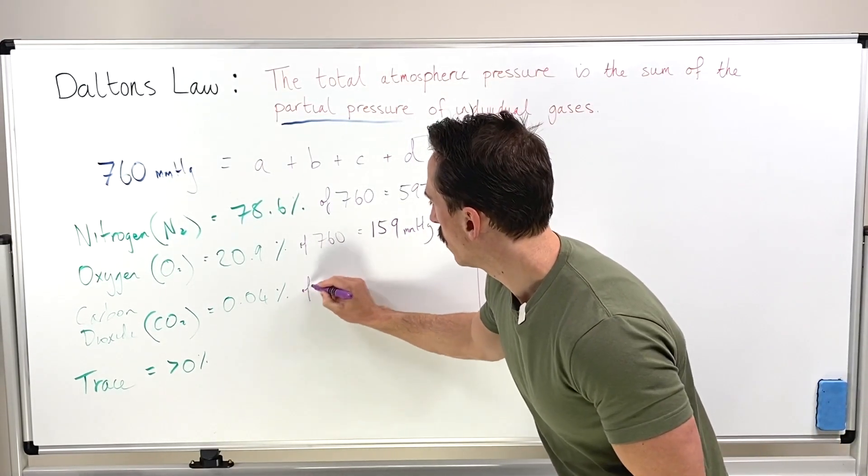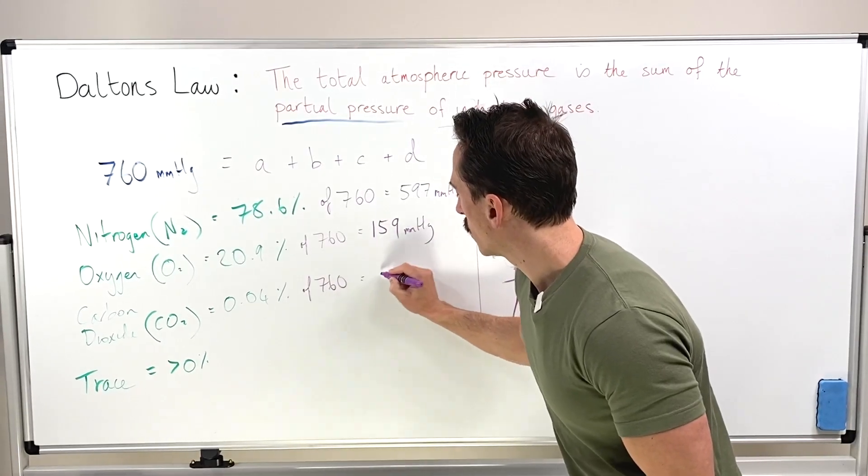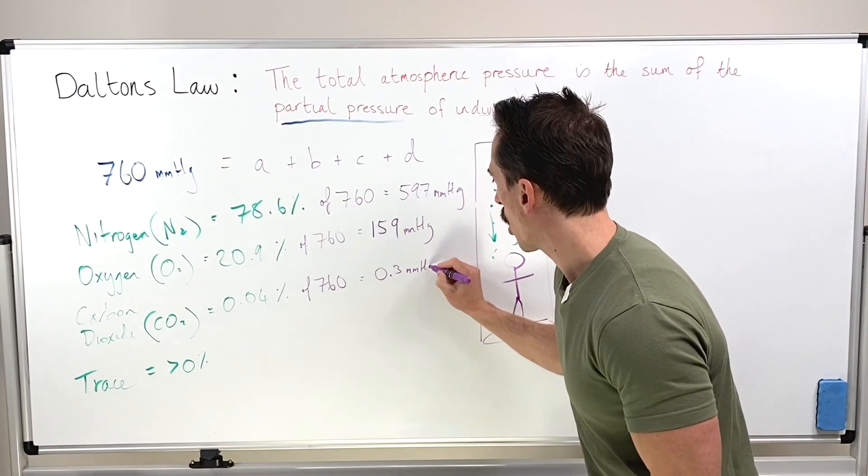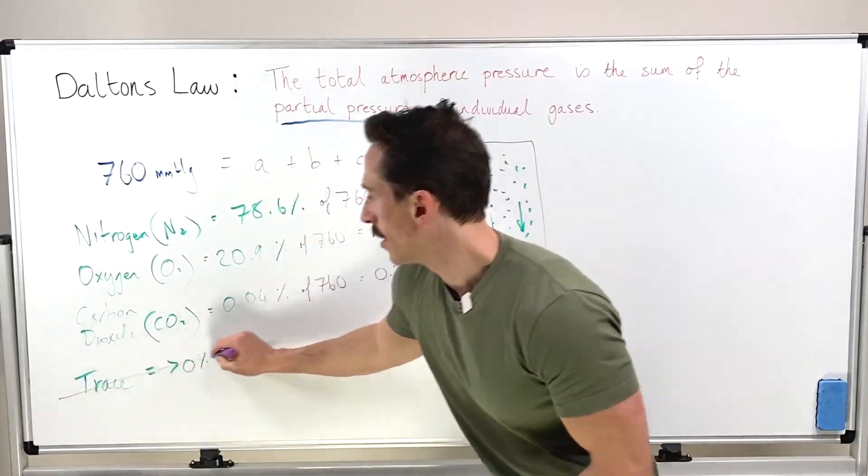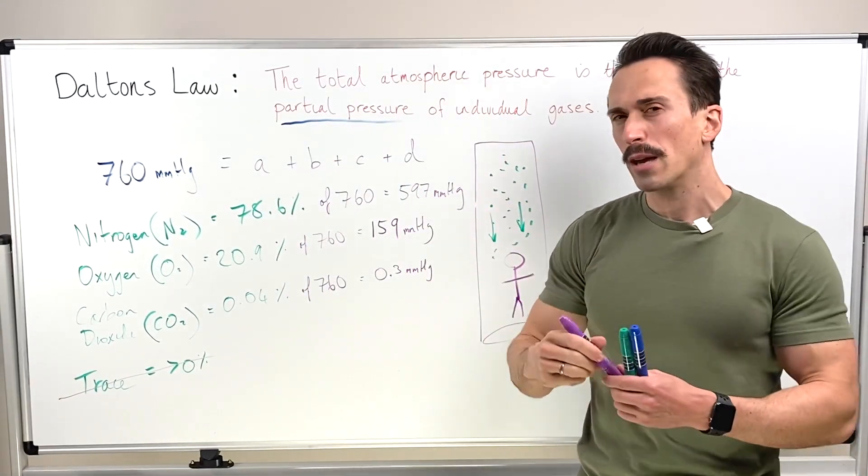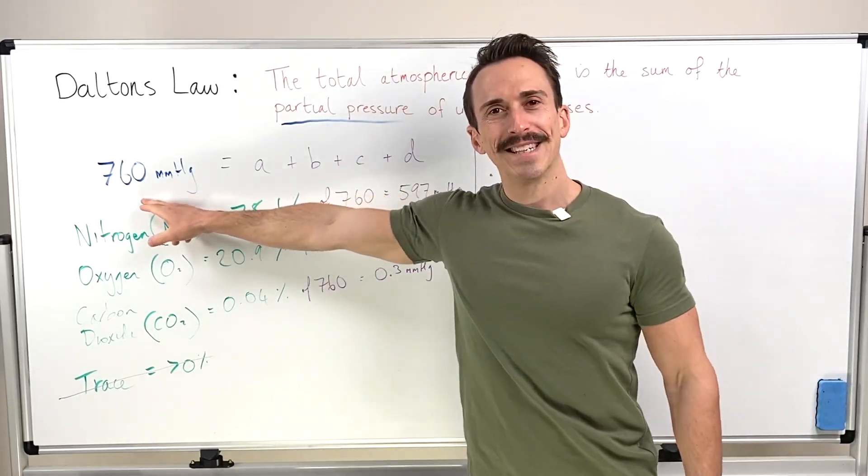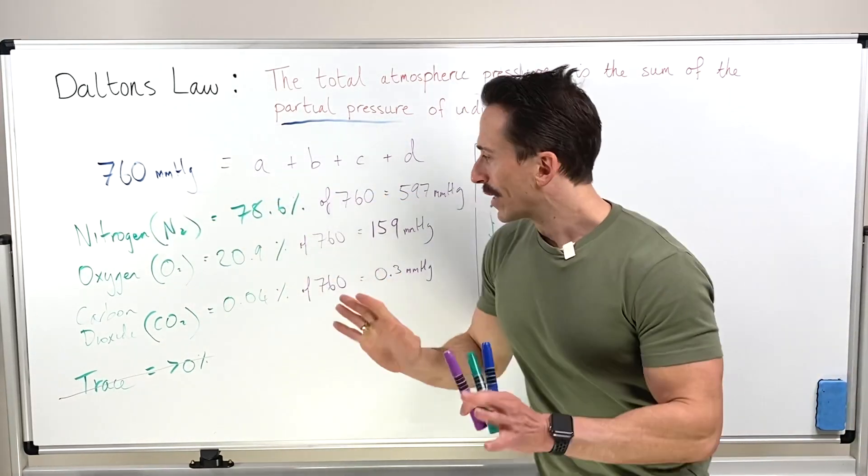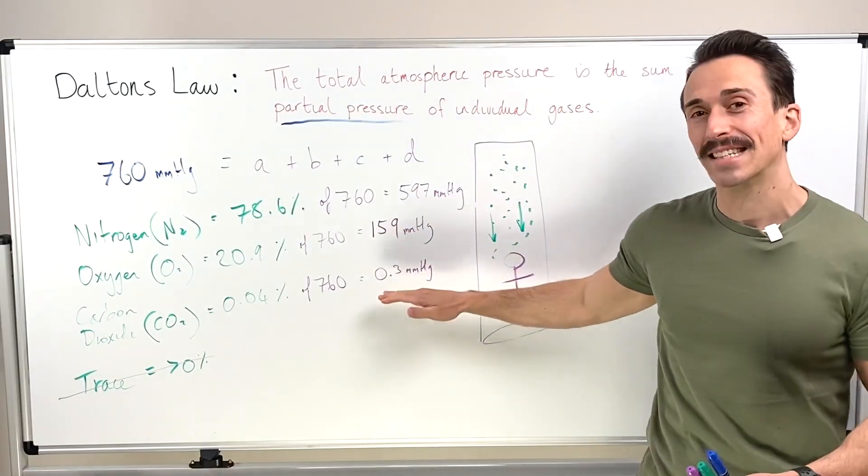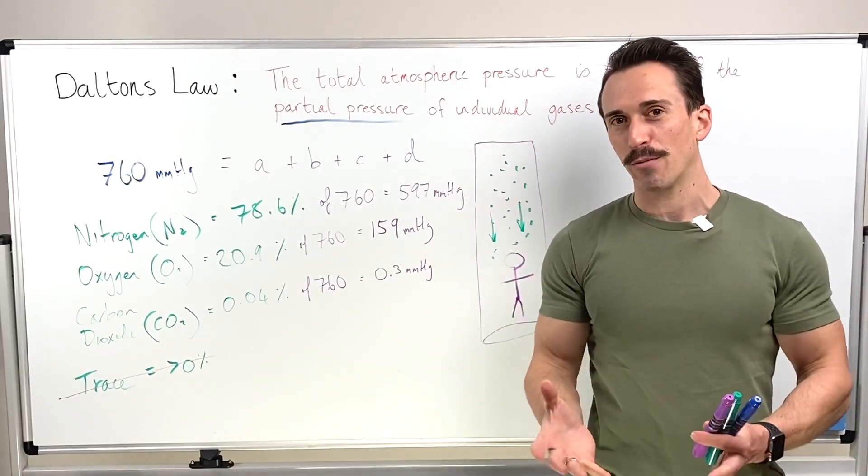And for carbon dioxide, it's going to be around about 0.3 millimeters of mercury. Let's not worry about the trace gases. So if we add those together, they should be around about 760 millimeters of mercury.